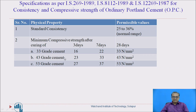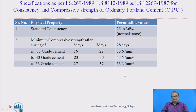For 43 grade cement, the minimum compressive strength values are 23, 33, and 43 N/mm² at 3, 7, and 28 days respectively. For 53 grade cement, these values are 27, 37, and 53 N/mm² respectively.